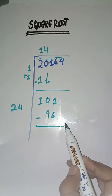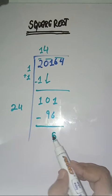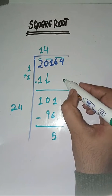We'll subtract. What do we have? 101 minus 96 is equal to 5. And next pair we have is 64.